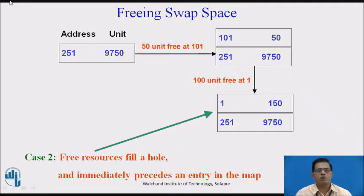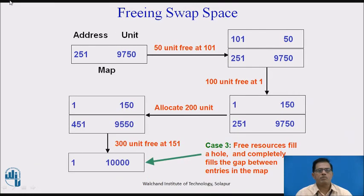Freed resources fill a hole and immediately precede an entry in the map — this is case 2. In case 3, free resources fill a hole and completely fill the gap between entries in the map. The map first contains address 251 with 9750 units. The kernel frees 50 units at 101, then 100 units at 150, then allocates 200 more units on the free available map device, making it 451 with 9550. Then the kernel frees more than 100 units at 151, making it 1 and 10000. These are the freed resources filling a hole as handled by the kernel.